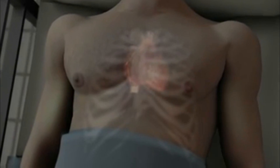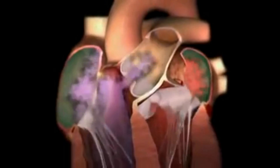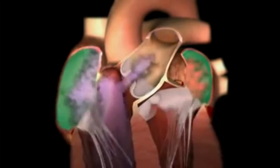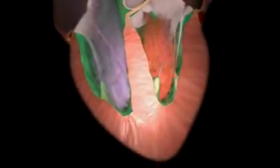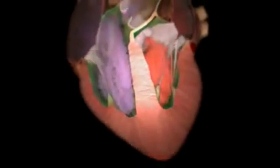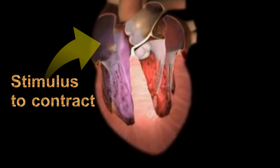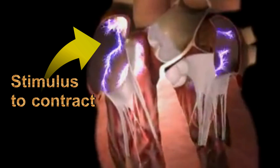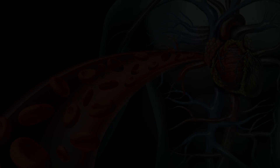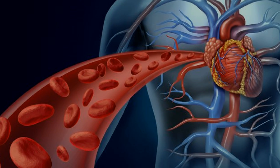It goes thump against the chest wall. You can feel the thump if you press there with your hand, and you can also listen to it with your ear. Cardiac muscle is a special type of muscle that is able to contract and relax 24 hours a day throughout your entire life. Cardiac muscle is myogenic, meaning that the stimulus to contract comes from within the muscle itself.